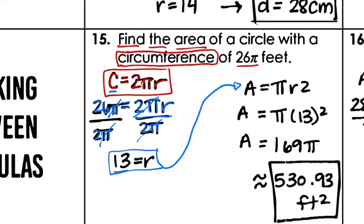Now plug r = 13 into the area formula: Area = πr² = π × 13² = π × 169 = 169π. Using the calculator: 169 × 3.14 ≈ 530.93 feet squared. This is the two-step process: use the circumference formula to find the radius, then use that radius in the area formula.